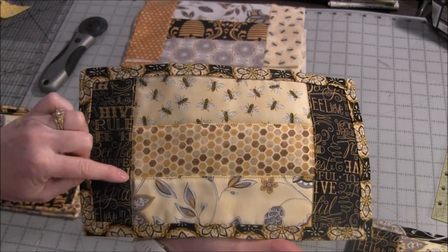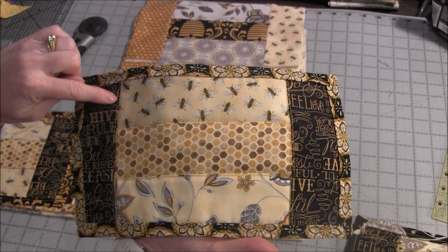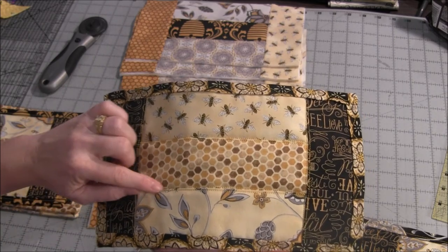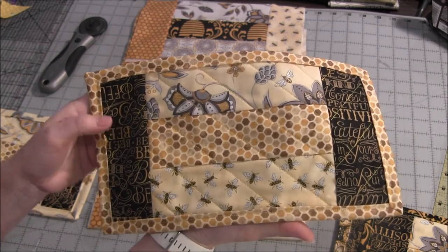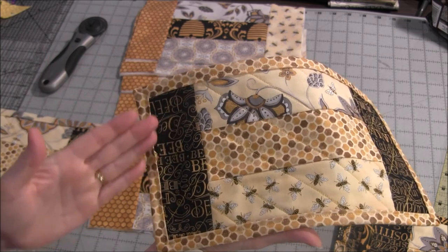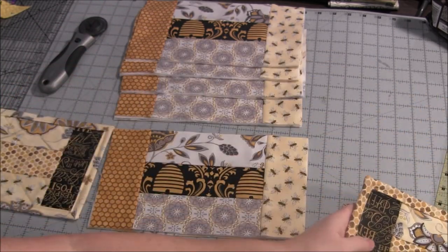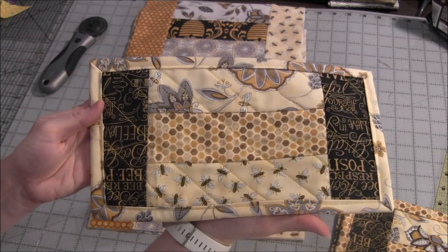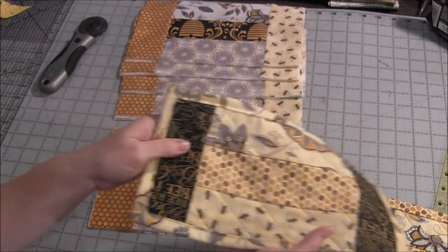So this one just has a single line through the center of each one of the strips going each direction. This one, I put a line of stitching on each side of each one of the seams. So there's on both sides. This one is diagonal lines across the center, and then notice that they're opposite diagonal across the side. I kind of like that one a lot. And this one is simply diagonals across the whole thing evenly. So you just have them all across.